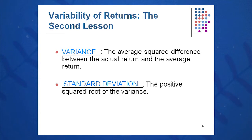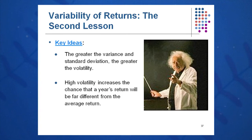Variance is simply the average squared difference between the actual return and the average return, and the standard deviation is the positive square root of the variance. Some key ideas: the greater the variance, the greater the standard deviation, the greater the volatility of the instrument, and high volatility increases the chance that a year's return will be far different than the average return.